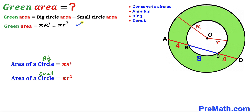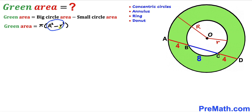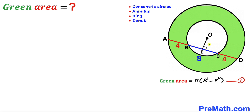The green shaded region area equals π R² minus π r². We can factor out π, giving us π(R² − r²). Our task is now to find the value of uppercase R² minus lowercase r². Let's label this as equation number 1.